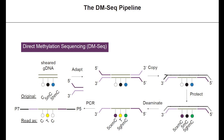In direct methylation sequencing, we take normal, sheared gDNA and actually put on special next-generation sequencing adapters, which were intentionally engineered to be resistant to our APOBEC deaminase and thus compatible with our workflow. These adapters then allow us to prime the creation of a copy strand, which is then especially favorable for DNA protection and modification with our new carboxymethyltransferase enzyme. Subsequent deamination with our APOBEC deaminase then yields only 5-methylcytosine read out as T. PCR amplification then allows us to sequence on any platform.